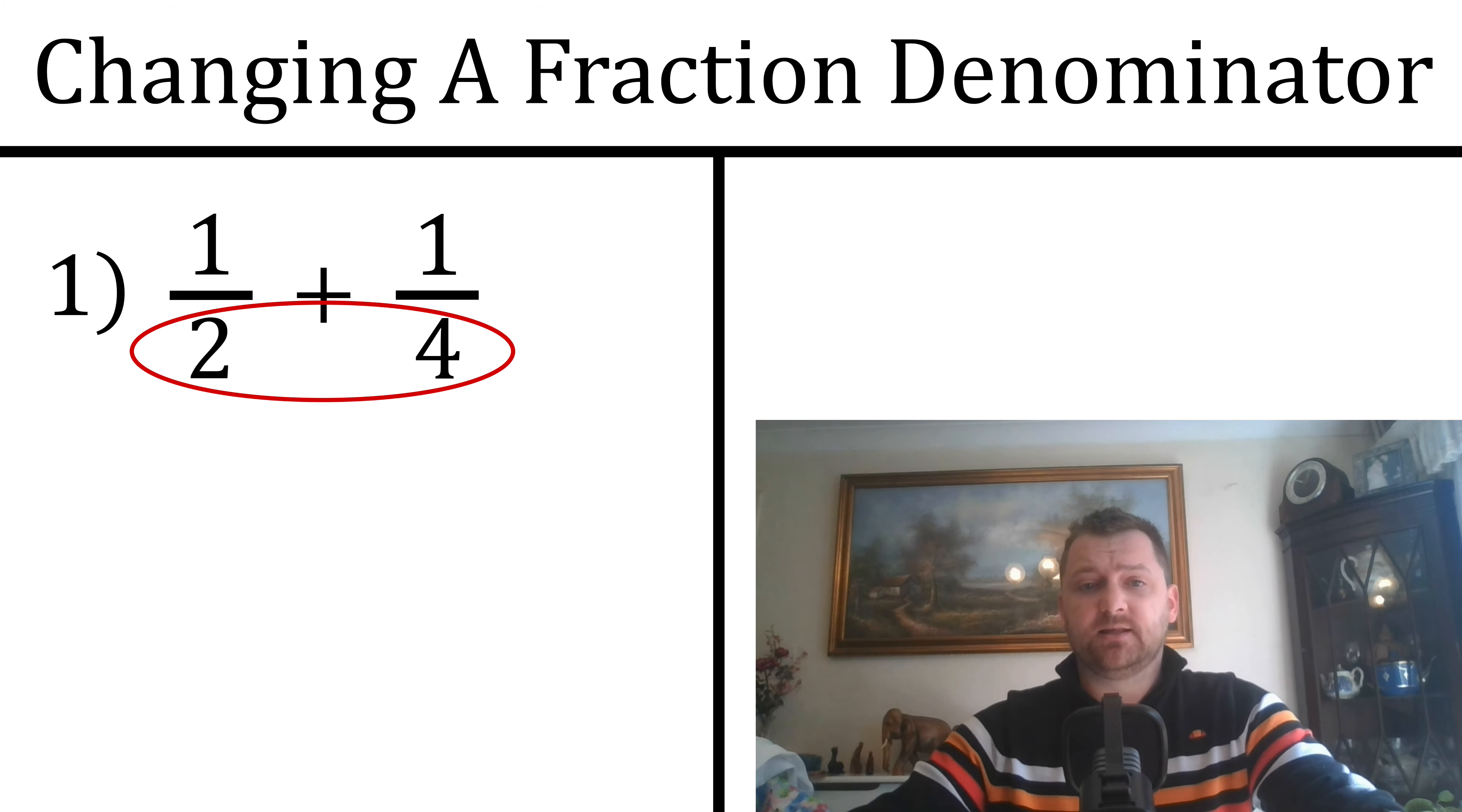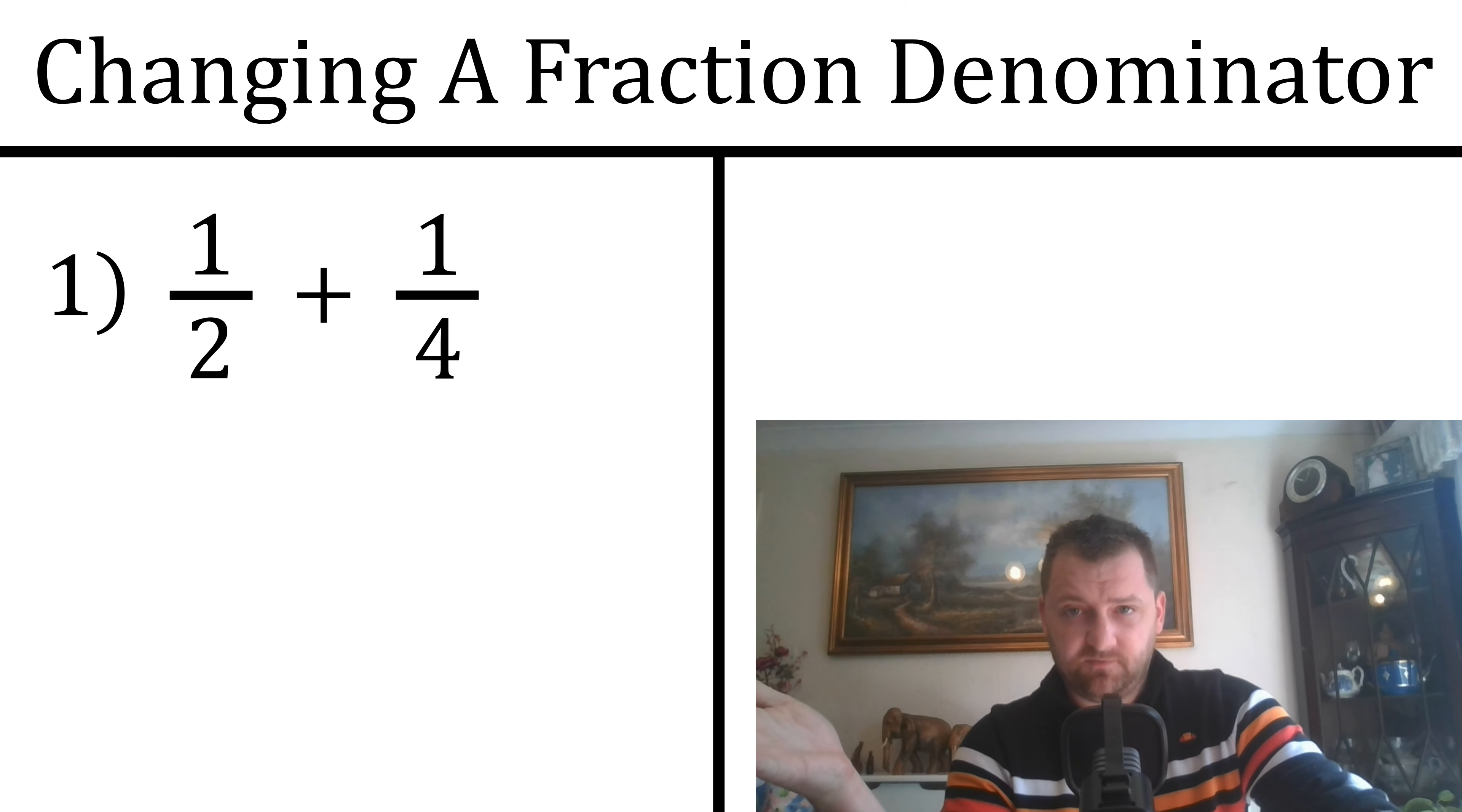I'll visualize it here with the little red circle. We have 1/2 and we have 1/4. So we need to think: how can we get the bottom numbers the same? Well, we know if we times 2 by 2, that's going to be 4.